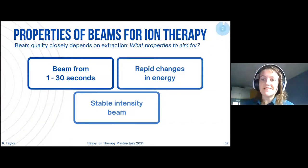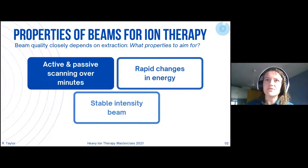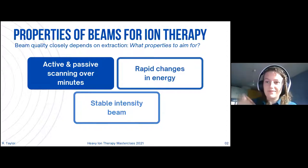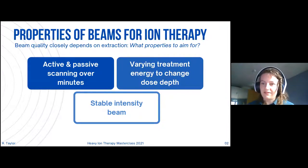What properties are we looking for when we have a beam for ion therapy? The quality depends very strongly on extraction. We need the beam to be continuous on the order from one second to 30 seconds. This is important because we're going to be doing active scanning and passive scanning, which is happening over minutes. You can't scan the beam if you've got a millisecond or microsecond beam. It needs to be slow and continuous. We want to have changes in energy and we want this to happen very quickly to vary the treatment energy and change the dose depth. The more powerful the particle, the further it can go, meaning we can have a 3D scan of the tumor rather than just a 2D one.